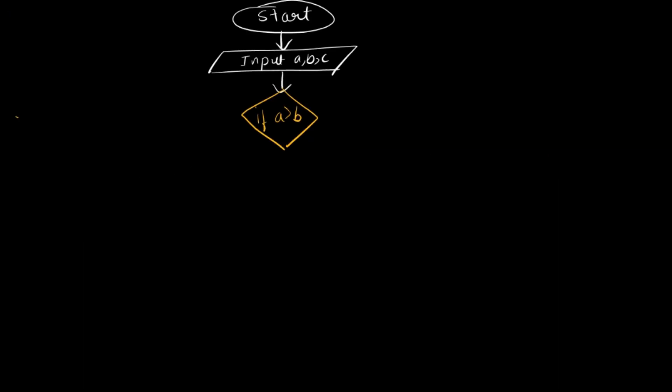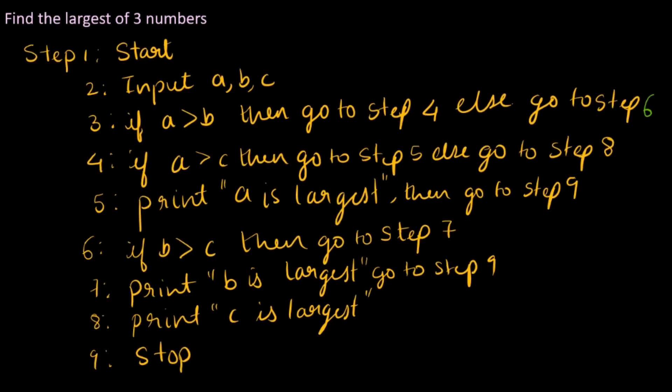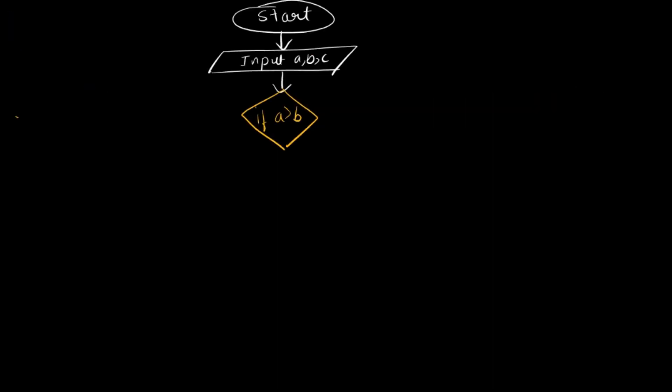Now there will be two conditions, right? If it is true or if it is false. If it is true, then what happens? Then go to step 4. So if it is true, then go to the next step. So I'll write yes here. Then next step is again to check if it is greater than C also.